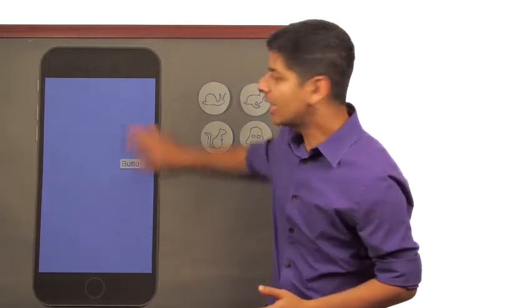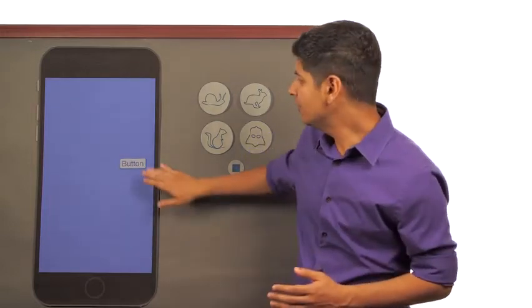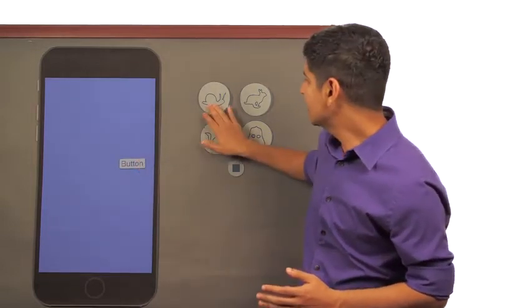So our next challenge is to build out this second scene in our app. Here are some tasks for you to practice. The first is to change the image of this button so it looks like the snail.